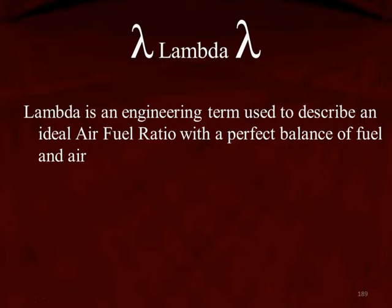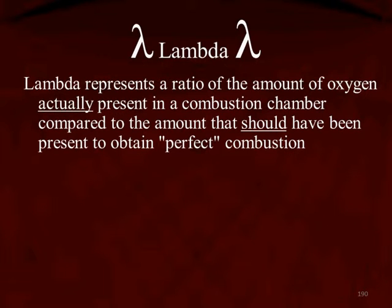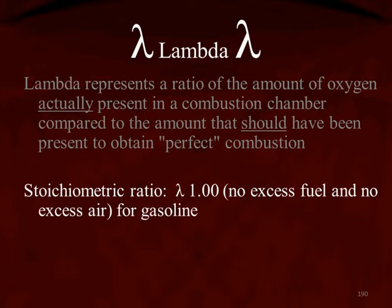Technicians talk about air fuel ratios, but engineers use a term called lambda to describe the ideal air fuel ratio — the perfect balance between air and fuel. Lambda is a number that represents the ratio of how much oxygen was actually present in the combustion chamber compared to how much should have been there, or what was needed to get perfect combustion.